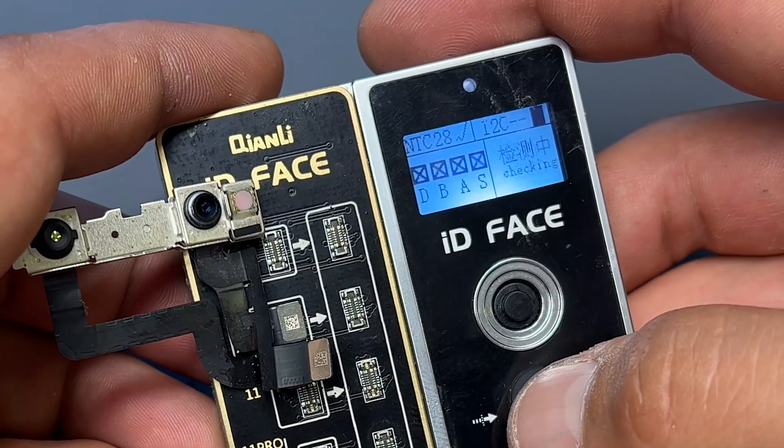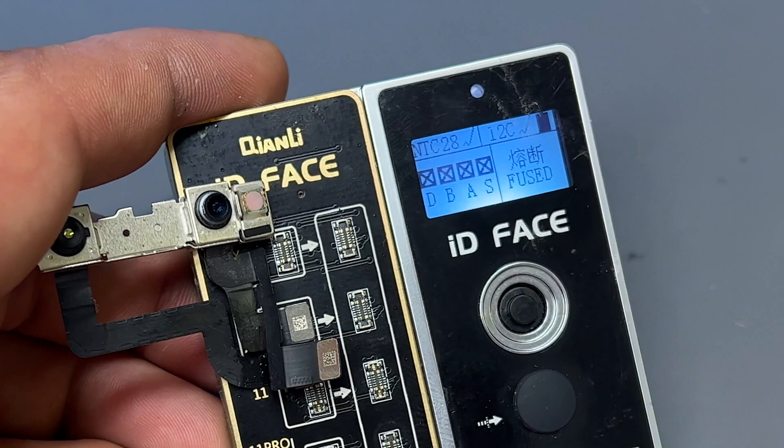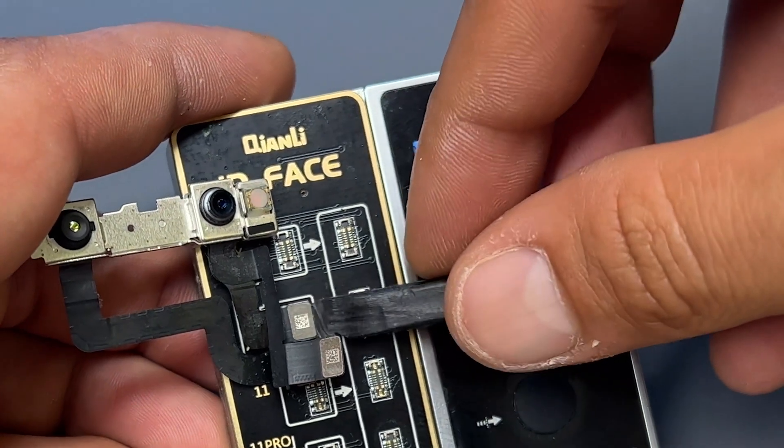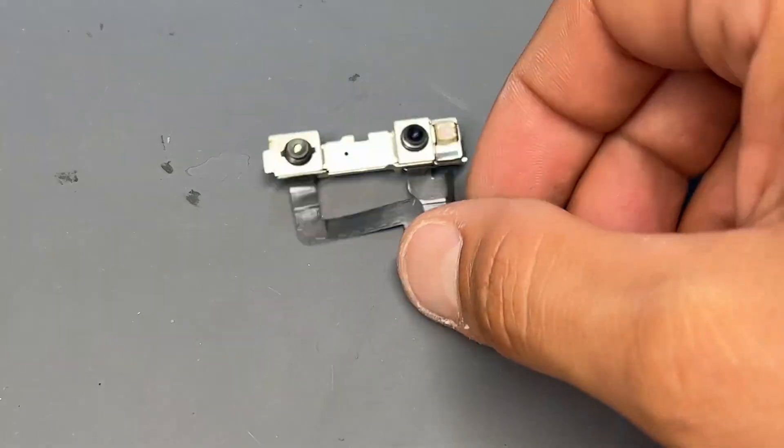It returns as fused and the four crosses confirm that this is where the fault lies, meaning we're going to have to swap the flex to fix it.